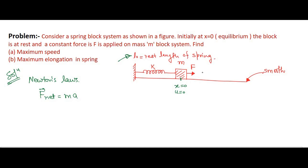Consider at any instant of time when the block is in motion, it is at position x. A constant force F is applied on it and there will be a spring force in the opposing direction, that is k·x. From the free body diagram, the mass m has force F applied on it and a spring force k·x.